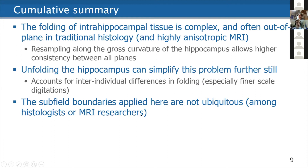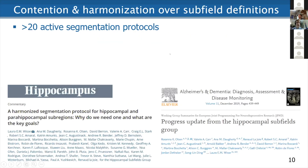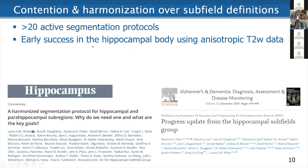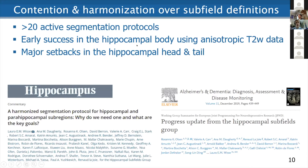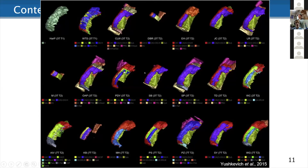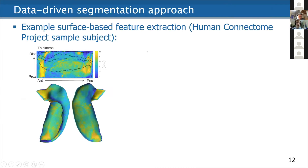Finally, I just want to point out that the subfield boundaries I've been talking about are not actually ubiquitous. There is quite an active discussion about this, including an ongoing harmonization effort some of you may have heard of, which has been going for a few years now but has had some major setbacks in the head and tail of the hippocampus. I just wanted to give you a quick sense of what some of these protocols look like. In the hippocampal head, most protocols simplify it quite a bit. So we wanted to speak to this issue and took a data-driven approach.